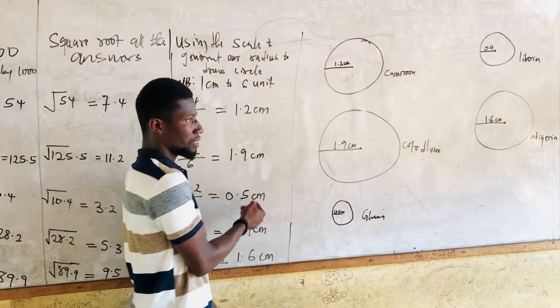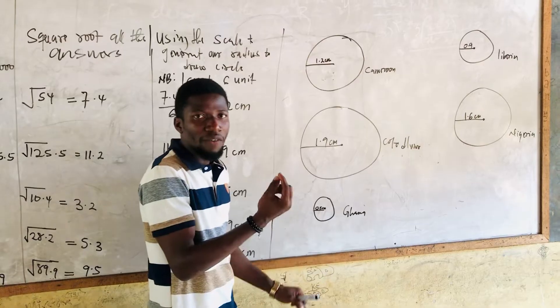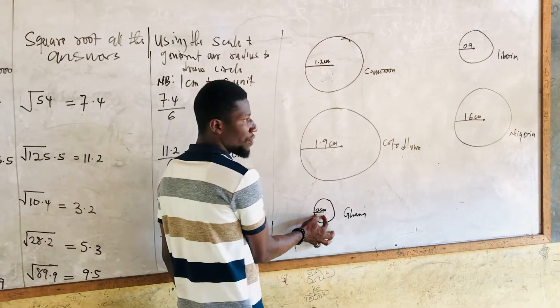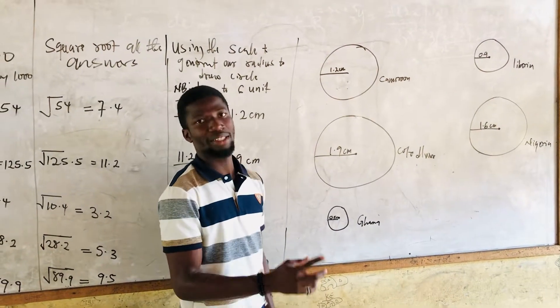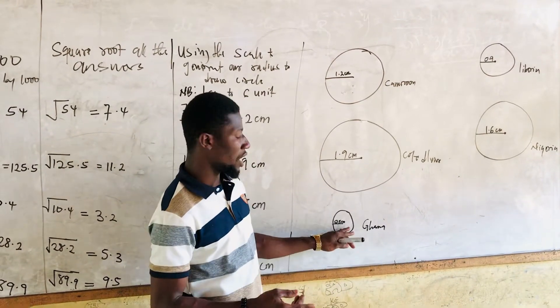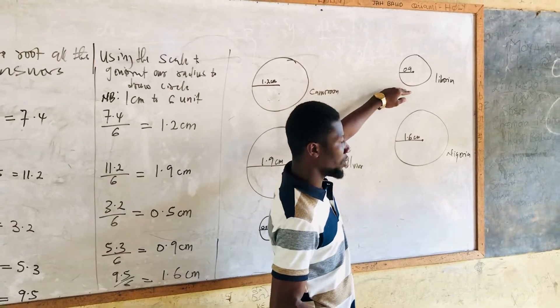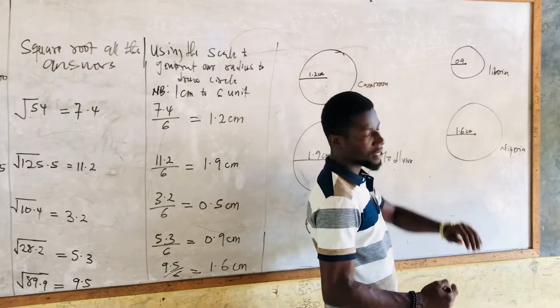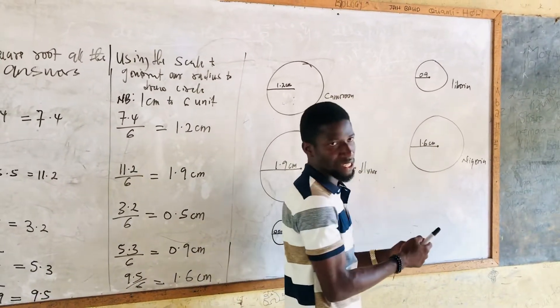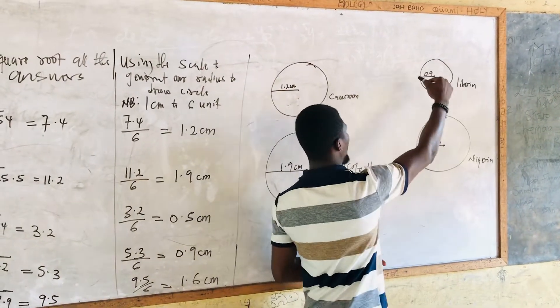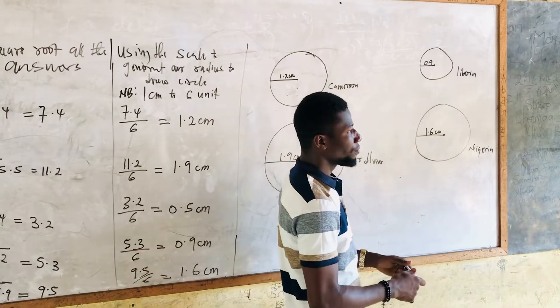Let's go to Ghana. We have 0.5 centimeters. We are going to measure 5 millimeters. You can see the circle is very small because 0.5 is not up to 1 centimeter. Let's go to Liberia, which after calculation, we have 0.9 centimeters. We open to 9 millimeters, then we draw our 9 millimeters circle and show our radius.